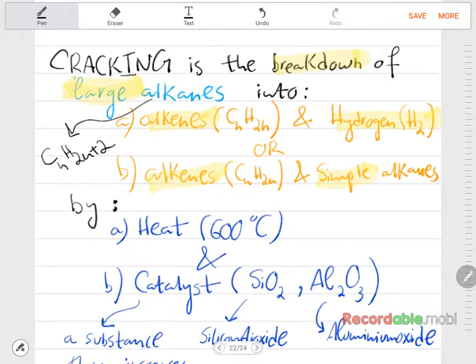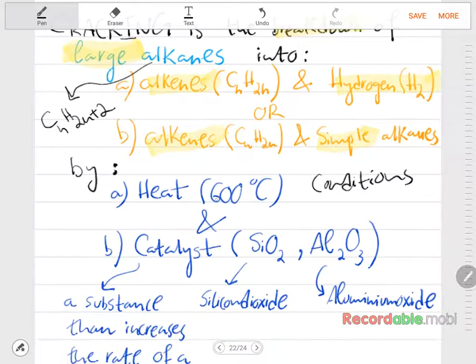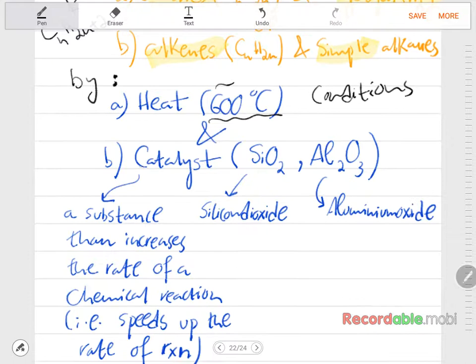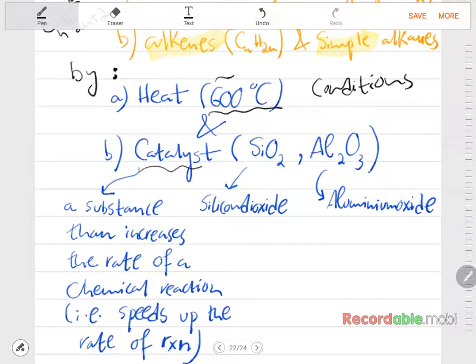Cracking is the breakdown of large alkanes. Now in order for this reaction to take place, there are certain conditions that need to be available, and these are heat. The temperature has to be at around 600 degrees Celsius.